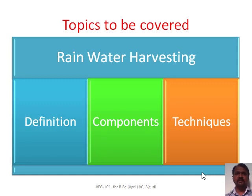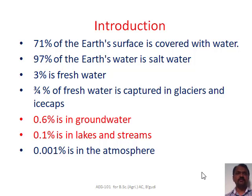Here we will see first what is the condition or situation of water. We are having around 71% of earth's surface which is covered by water, out of which 97% is salty water, and only 3% is fresh water, out of which three-fourths of fresh water is captured in glaciers and ice caps. Around 0.6% is present in groundwater, 0.1% in lakes and streams, and 0.001% is available in the atmosphere.